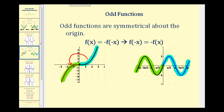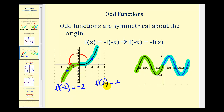Let's see what happens when we consider function values on odd functions. Notice in this graph, f of two is equal to positive two. But f of negative two — if we switch the sign of the x-coordinate — notice how the y-coordinate also switches signs. f of negative two is equal to negative two. So to state this relationship in general, we say that f of x is equal to the opposite of f of negative x. Or equivalently, f of negative x is equal to the opposite of f of x. Meaning if the function is odd and we change the sign of the x-coordinate, the y-coordinates or the function values will be the opposite sign.